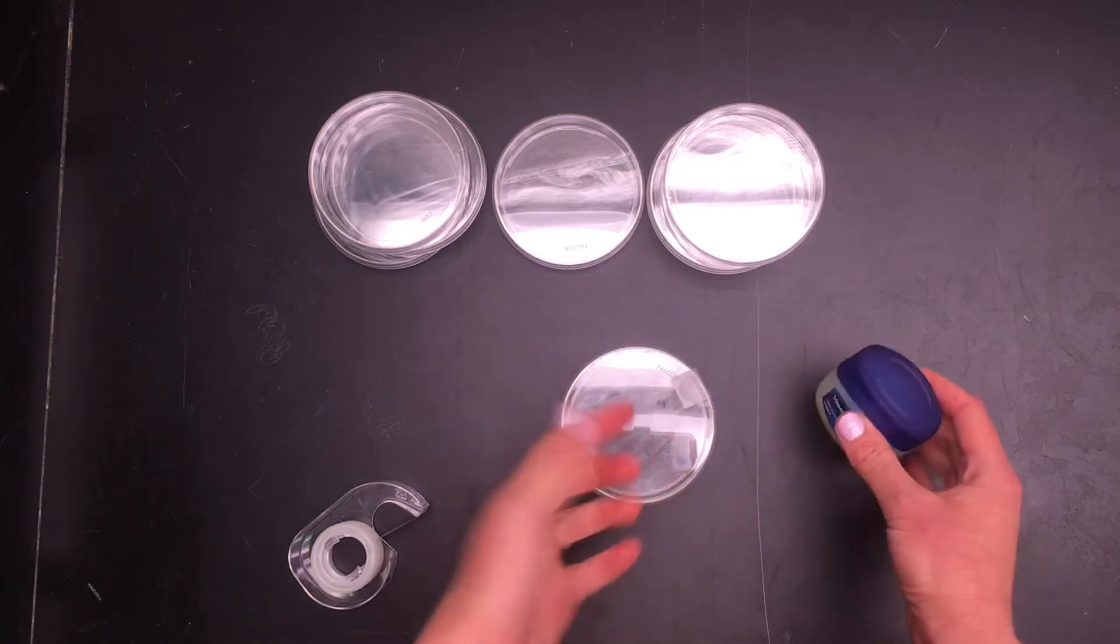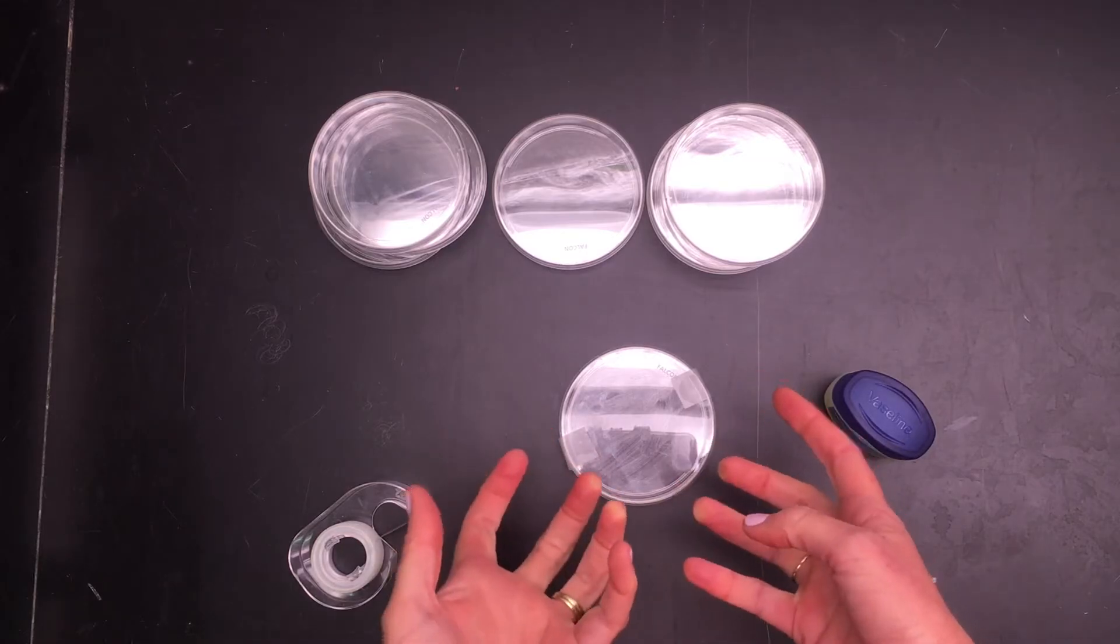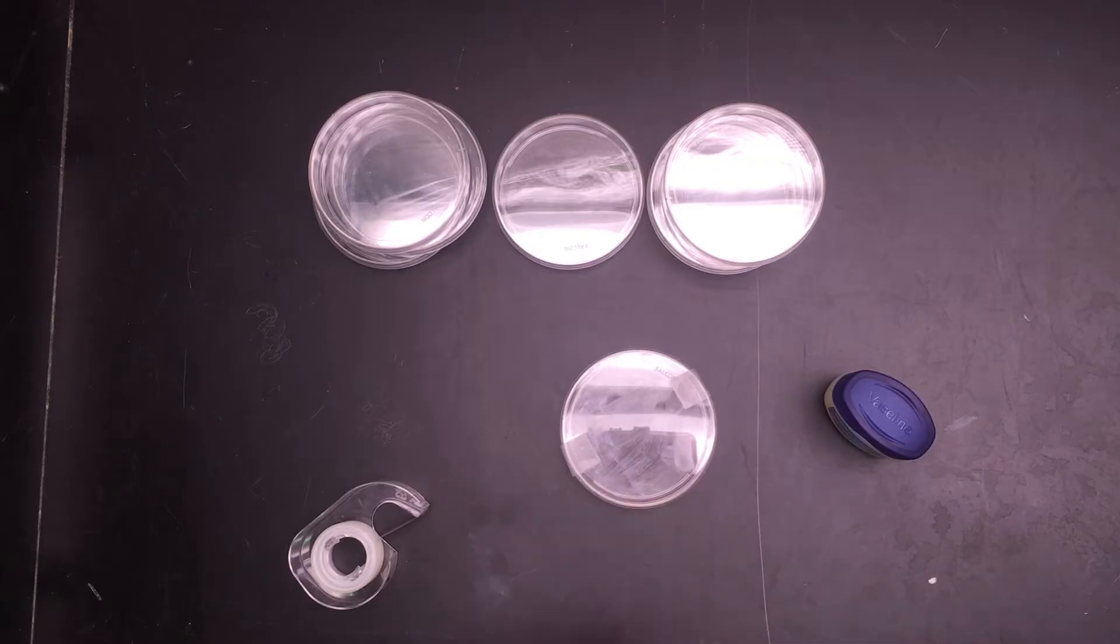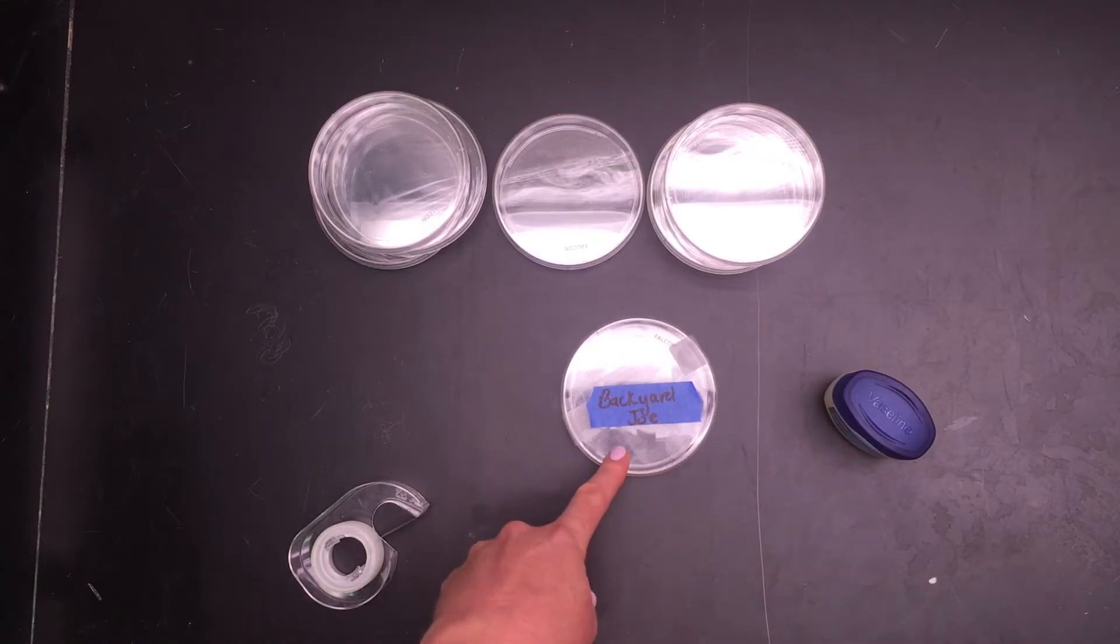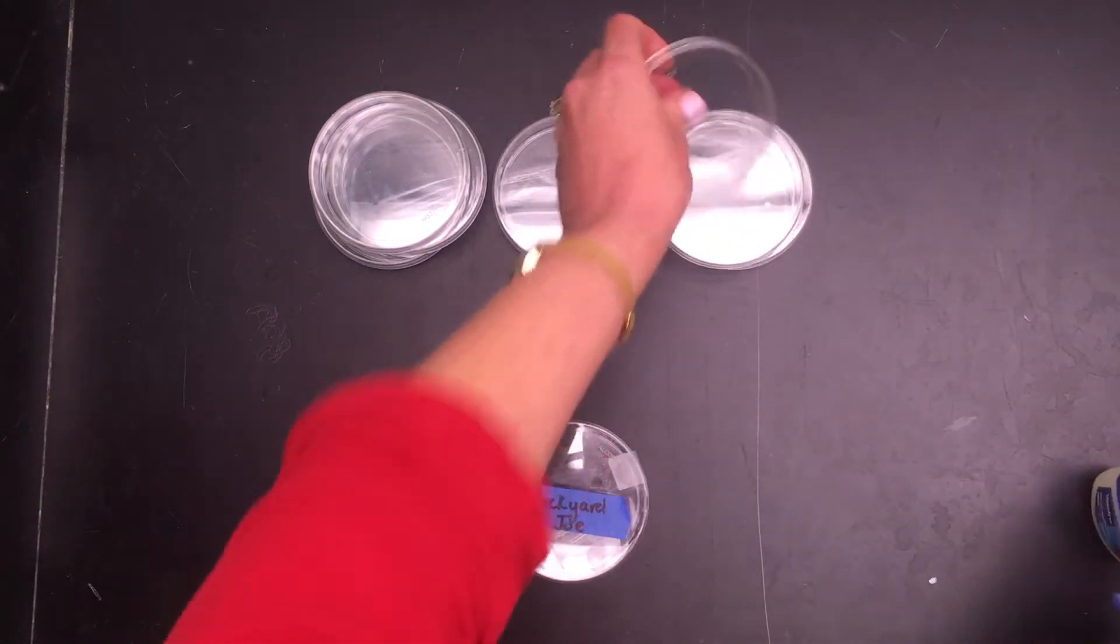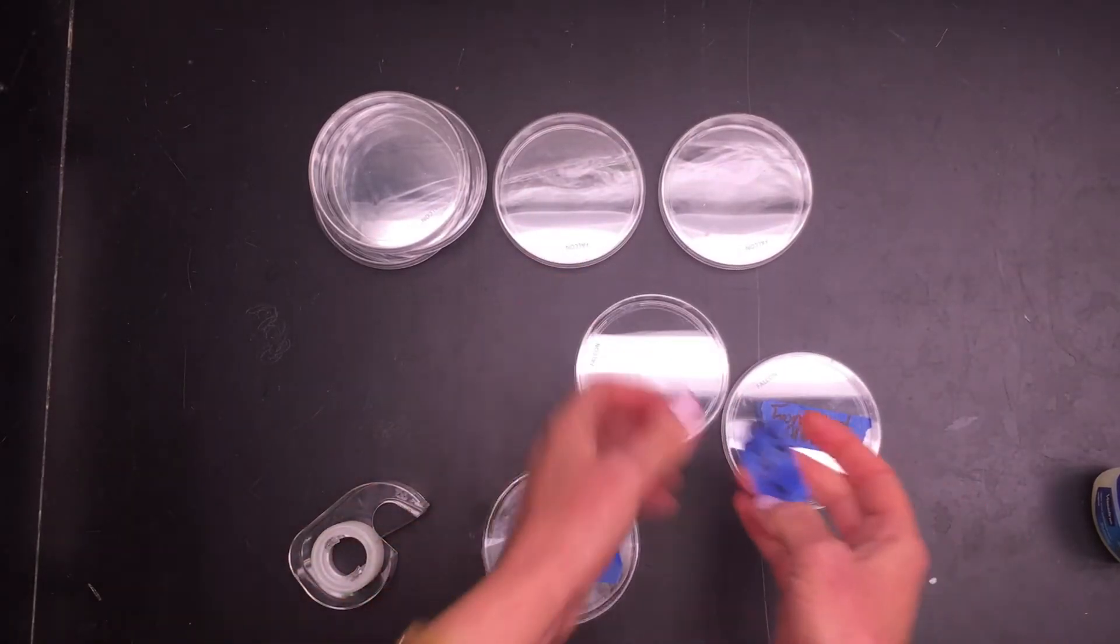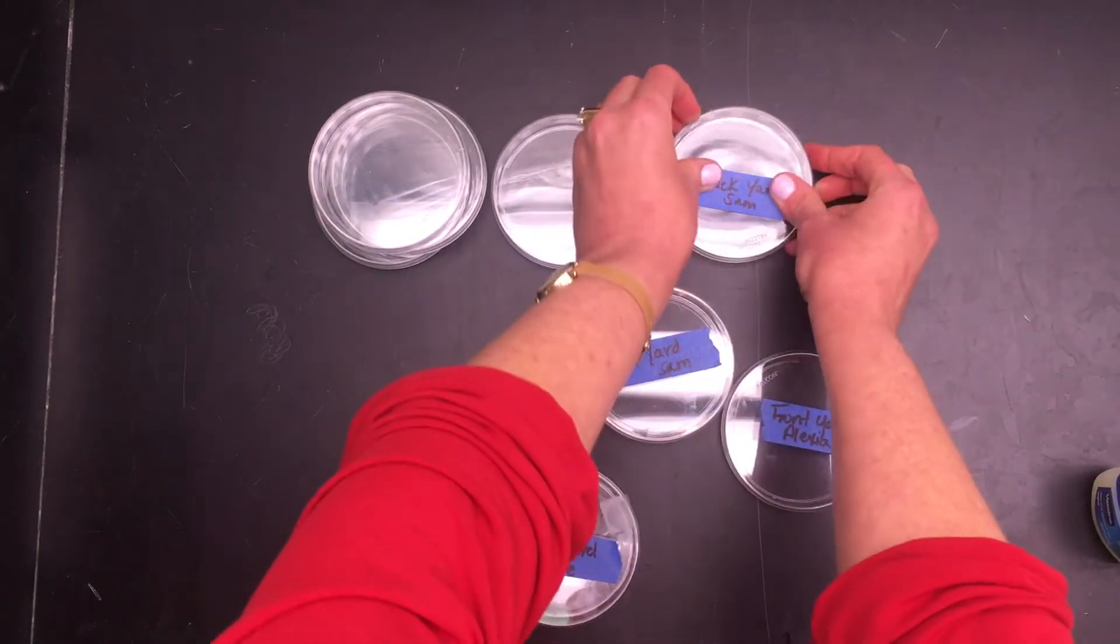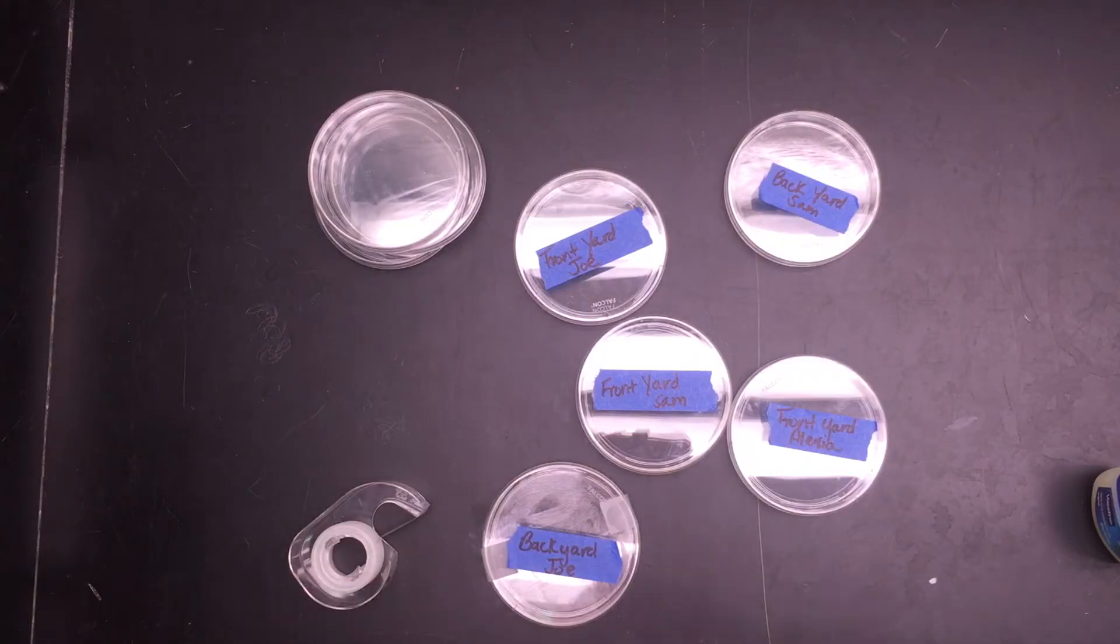If you don't have petroleum jelly, you can even replace it with lip gloss or chapstick or any sort of sticky substance that you would put on with a thin layer. Then you're going to label it—so let's say this one's going to Joe's backyard. You're going to do the same with all of your dishes: smear them with petroleum jelly, put the labels on, and tape them closed.